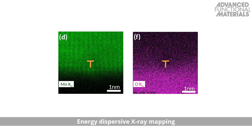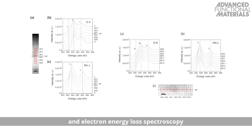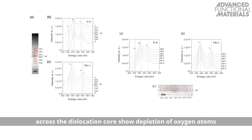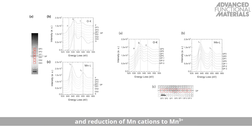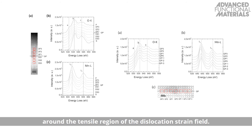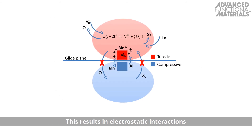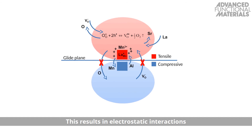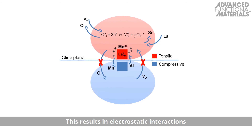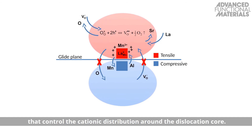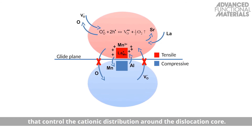Energy dispersive x-ray mapping and electron energy loss spectroscopy across the dislocation core show depletion of oxygen atoms and reduction of manganese cations to Mn3+ around the tensile region of the dislocation strain field. This results in electrostatic interactions that control the cationic distribution around the dislocation core.